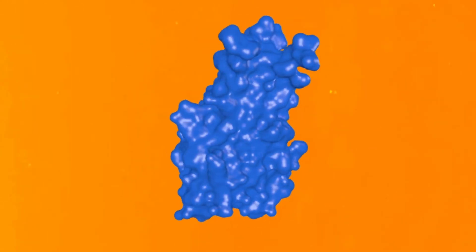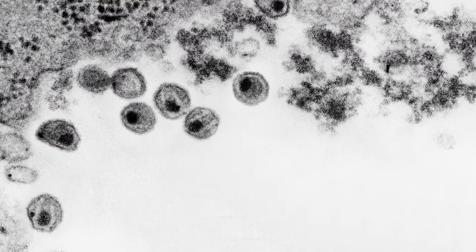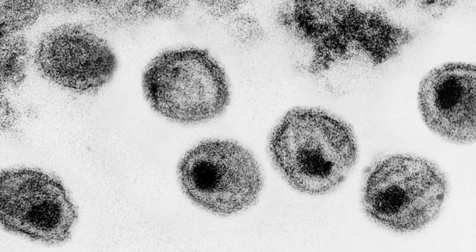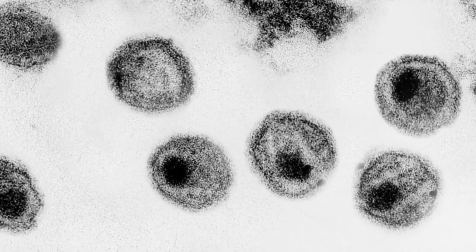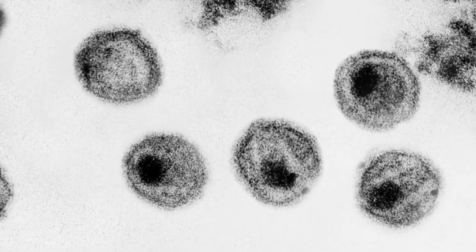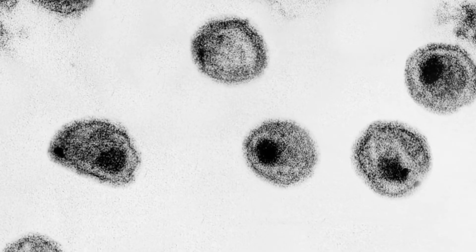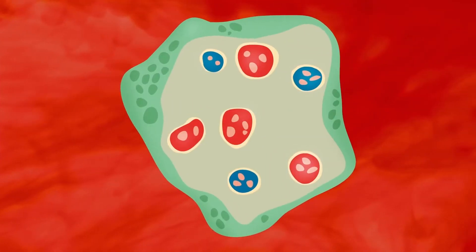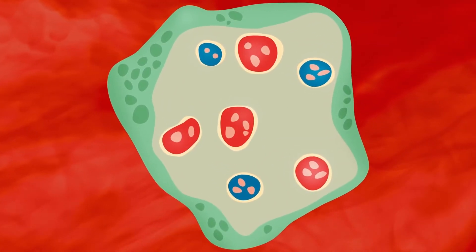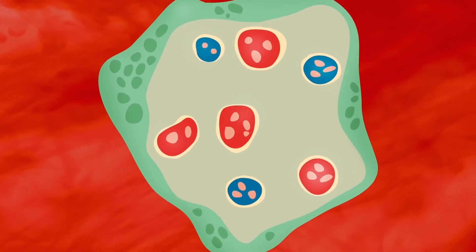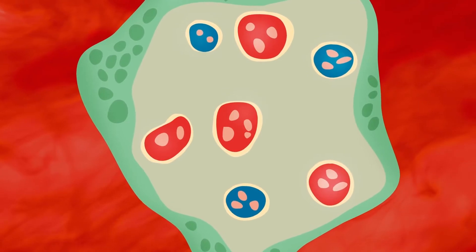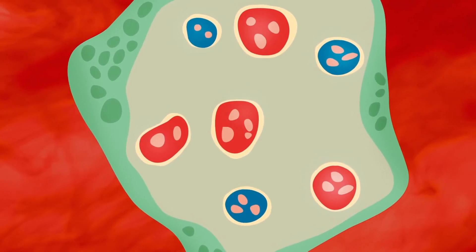Syncytin-2 is not the only viral env gene that we have turned to our use. In a separate rare event around 25 million years ago, another retroviral infection gave us syncytin-1, another viral env gene that became part of us. While we have a model for how syncytin-2 fuses cells together to form and resupply the syncytiotrophoblast with new cells, the role of syncytin-1 is not as clear. But the two likely work together to fuse cells into the syncytiotrophoblast.